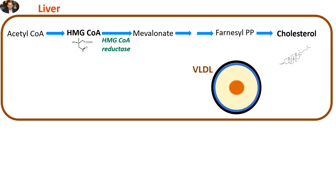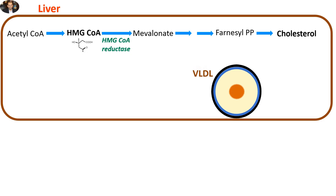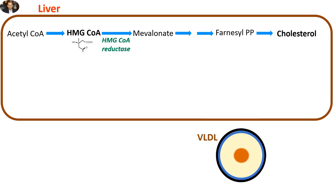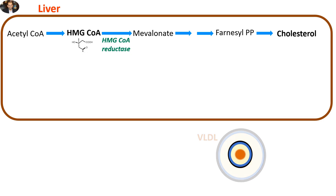The newly produced cholesterol molecules in the liver are transported to very low-density lipoproteins, abbreviated as VLDL, which deliver them to various extra-hepatic destinations. In the blood, VLDL is converted into low-density lipoproteins, abbreviated as LDL.